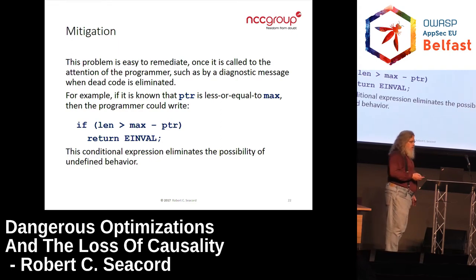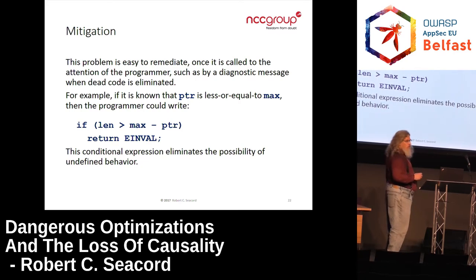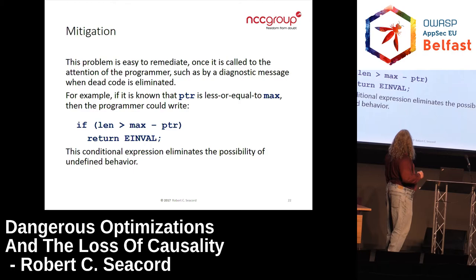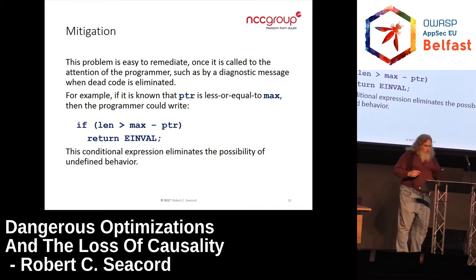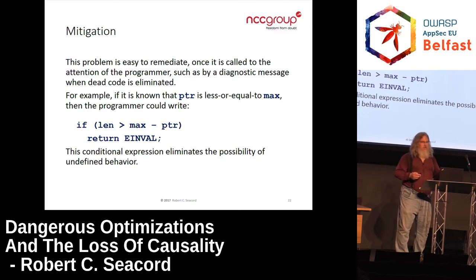Once you're aware of this problem, it's actually quite simple to fix. If you know that pointer is less than or equal to max — which we do because pointer points at the beginning of the array and max points to the end — you can just subtract pointer from both sides and compare to see if len is greater than max minus pointer. This won't wrap around because max is greater than pointer, and consequently there's no undefined behavior, so the compiler is required to evaluate this expression at runtime. This defect actually occurred in the Plan 9 code written at Bell Labs — so when I say experienced programmers make this mistake, those guys are pretty experienced.